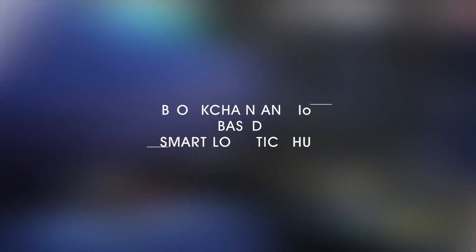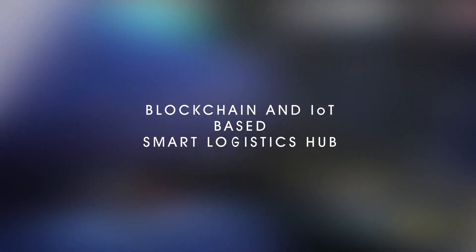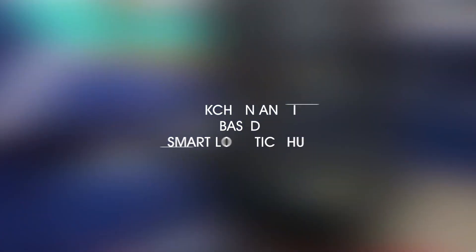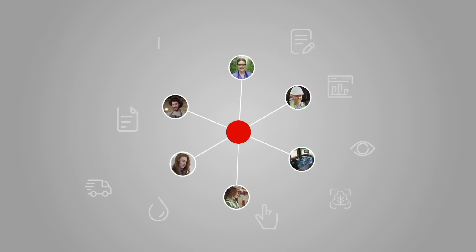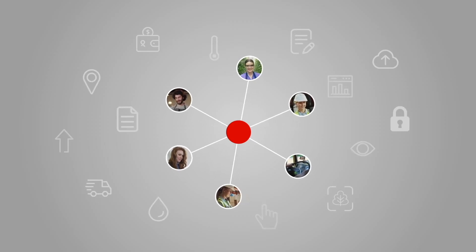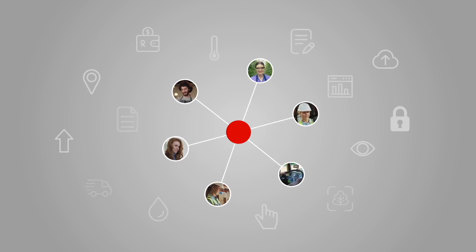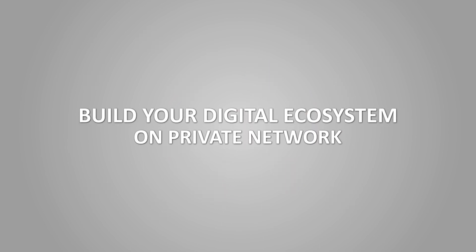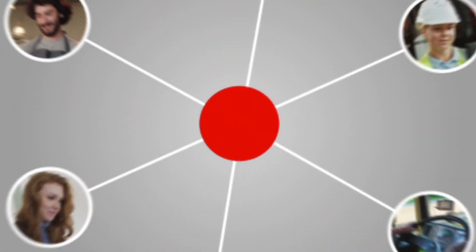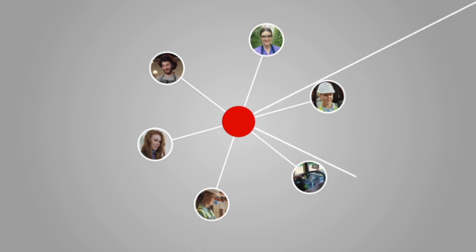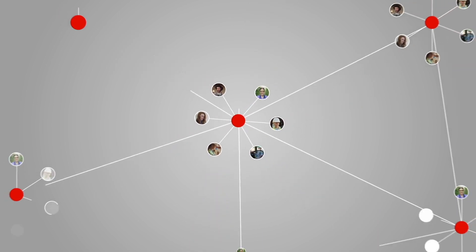In this video I'll explain the decentralized onboarding process of the Smart Hub and give a quick overview of some other cool features. Similar to decentralized exchanges like Uniswap, we aim to build a fully decentralized blockchain network for supply chain.